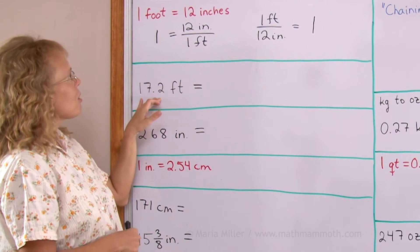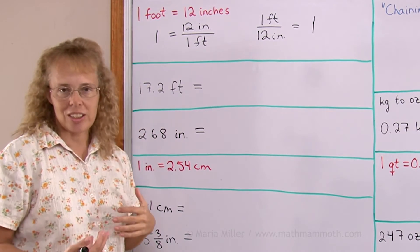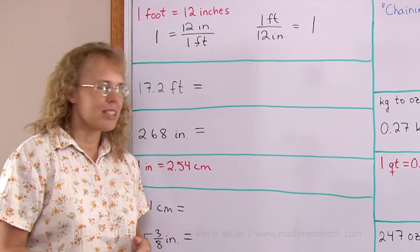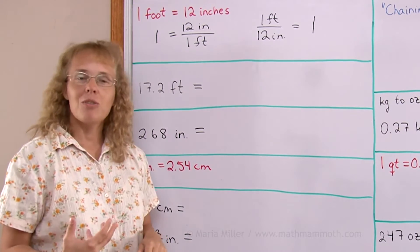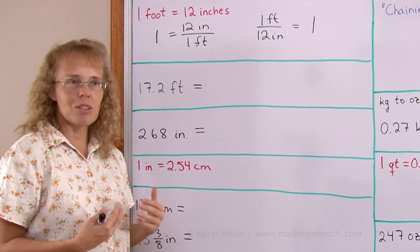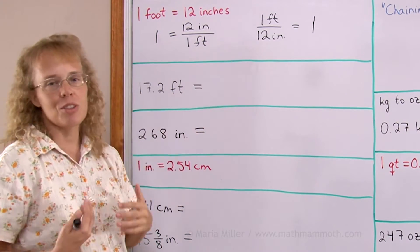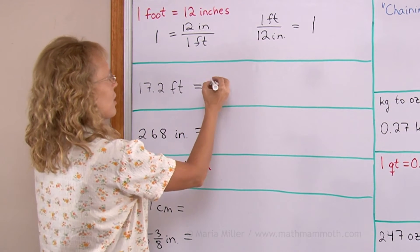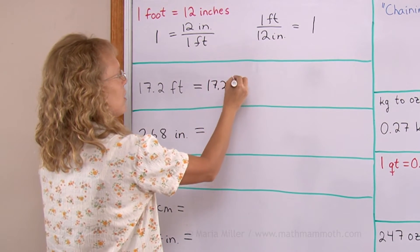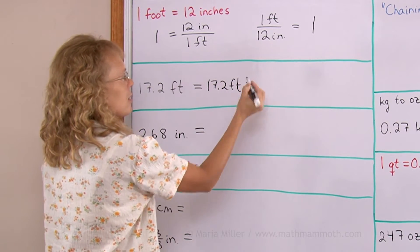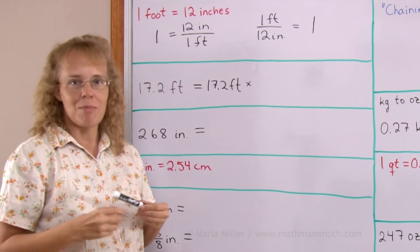Now, when we are converting something, we're going to convert feet to inches. You probably already know how to do it, but I want to show you with a simple example how this works using these ratios in conversion. I will take 17.2 feet and multiply it by number one.